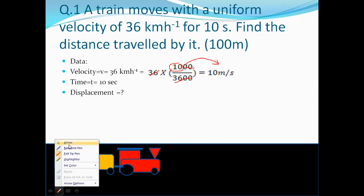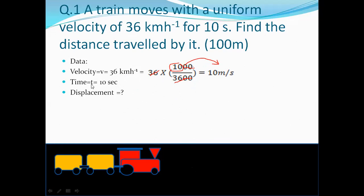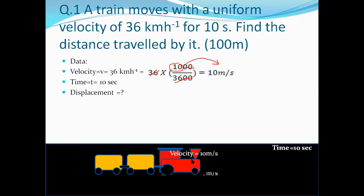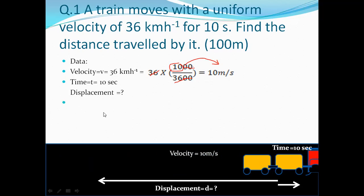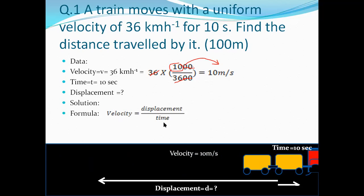Moving on to the question part: time T is equal to 10 seconds. The train travels from point A to point B in 10 seconds, and we have to calculate the displacement. Velocity is 10 meters per second, and after 10 seconds it reaches the endpoint. We have to calculate the displacement.